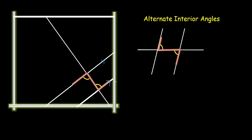Again, this Z-shape can be a normal looking Z, a mirror image of a Z, inverted, rotated — any kind of Z-shape.